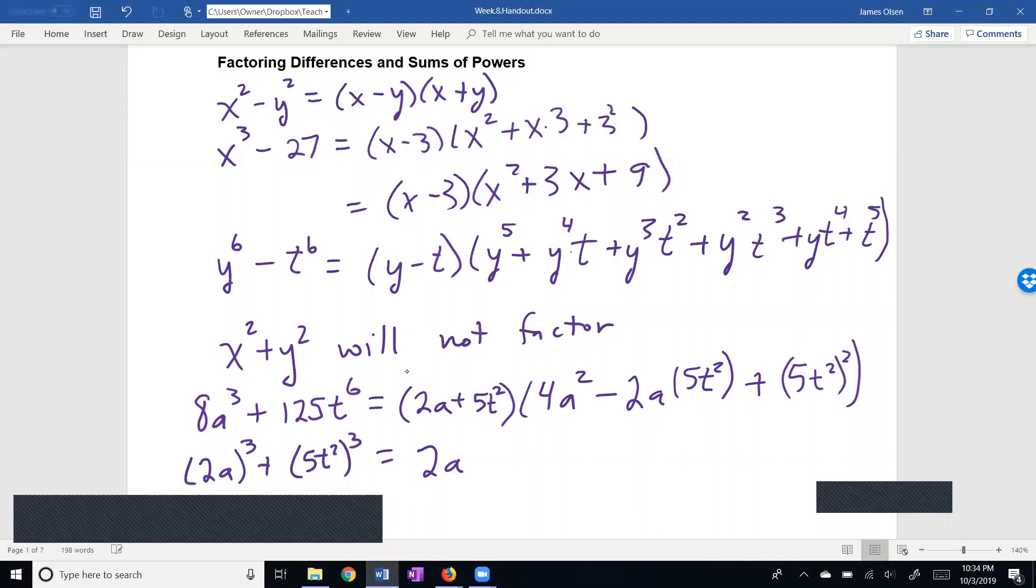So let's do a little bit of simplifying. 2a plus 5t squared times 4a squared minus 10at squared plus 25t to the fourth. And I will let you multiply this out to make sure that this checks. Once again, we get some positive terms, we get some negative terms. Many of the terms cancel out but the terms that do not cancel out are going to be 8a to the third and 125t to the sixth.